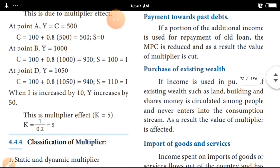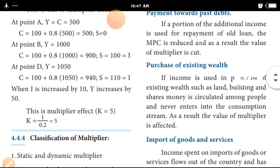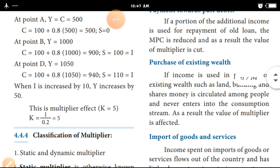Purchase of Existing Wealth. Purchase of Existing Wealth such as land, building, and shares. Money is circulated among people and never enters into the consumption stream.